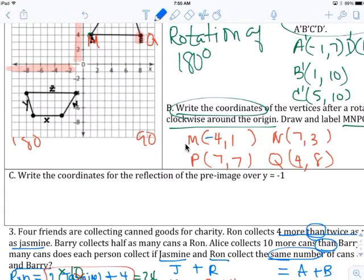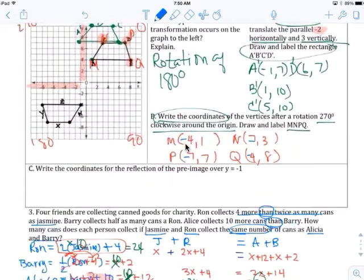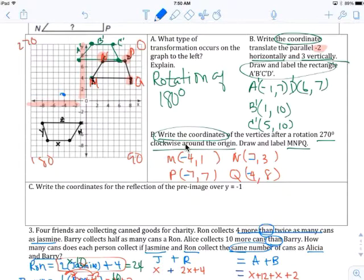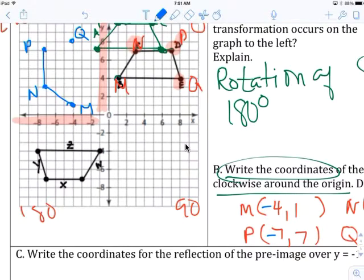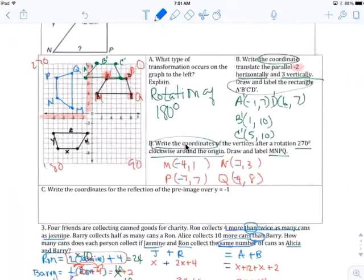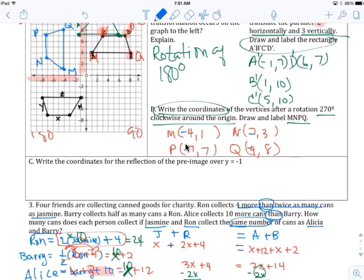And graph it in there. Negative 4, 1. Negative 7, 3. Negative 7, 7. Negative 4, 8. And that's M, N, P, and Q. There we go. Perfect. Follow the rules, and it's always right.